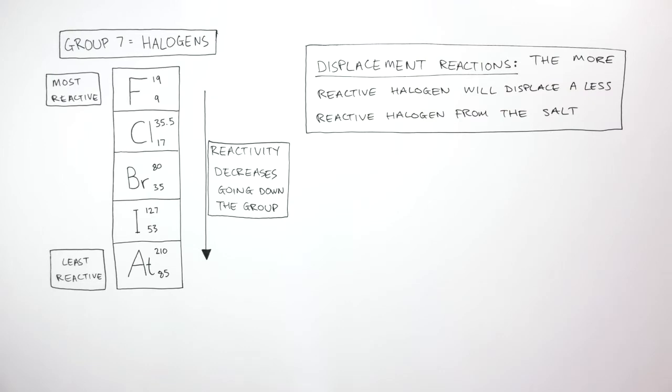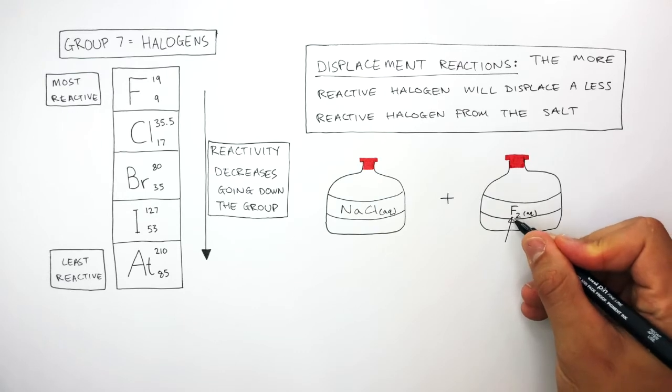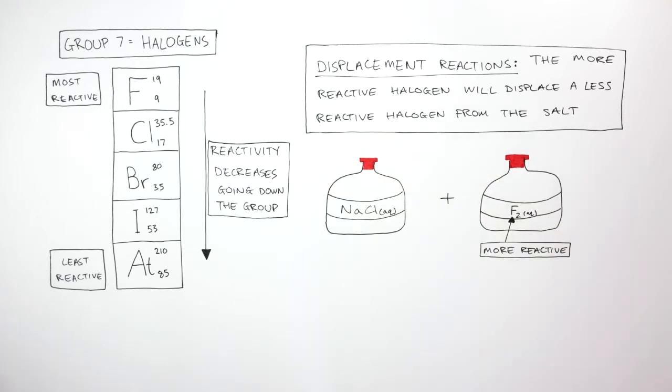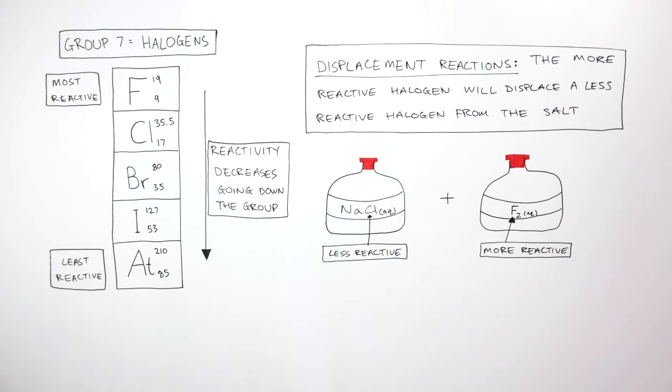What happens when we have a solution of sodium chloride (NaCl) reacting with a solution of fluorine (F2)? Fluorine is more reactive than chlorine because fluorine is above chlorine in Group 7, and chlorine is less reactive than fluorine because it's below fluorine in Group 7. Therefore,